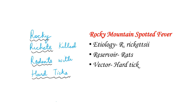The next mnemonic is: 'Rocky ricketts killed rodents infected with hard ticks.' By this we remember that Rocky Mountain Spotted Fever has Rickettsia rickettsii as the etiological agent, the reservoir is rats or rodents, and the vector is hard tick.